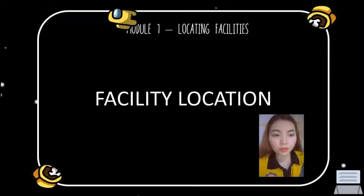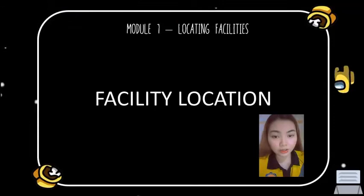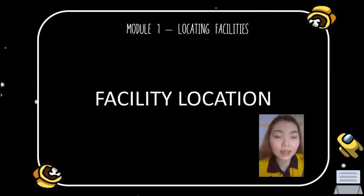Facility location is the process of determining geographic size for a firm's operations, which could include a manufacturing plant, a distribution center, and a customer service center. Facility location is the right location for the manufacturing facility.